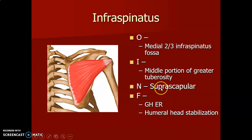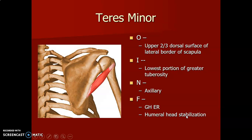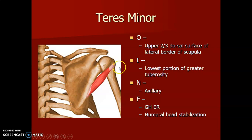Subscapularis originates from the subscapular fossa anteriorly and inserts on the lesser tuberosity of the humerus and the anterior capsule of the glenohumeral joint. Innervated by both the upper and lower subscapular nerves, it causes internal rotation of the glenohumeral joint and stabilizes the humerus.